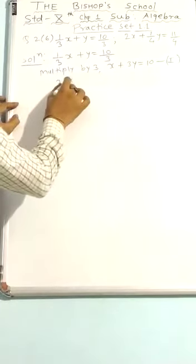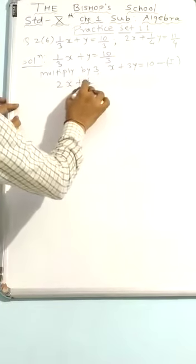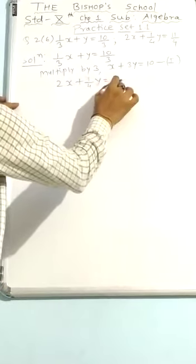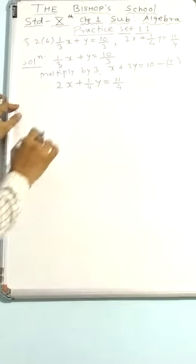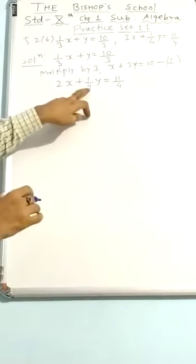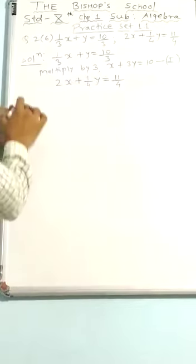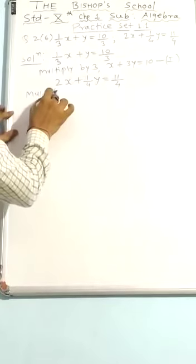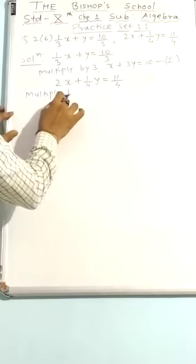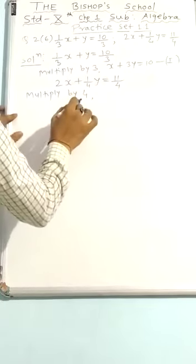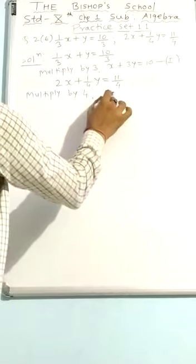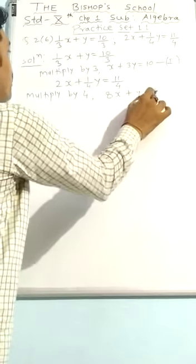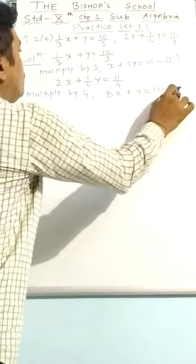Similarly, 2x plus 1 upon 4y equal to 11 upon 4. Here also the denominator is 4, so I will multiply through by 4. We have 8x plus y equal to 11. That is my equation number 2.